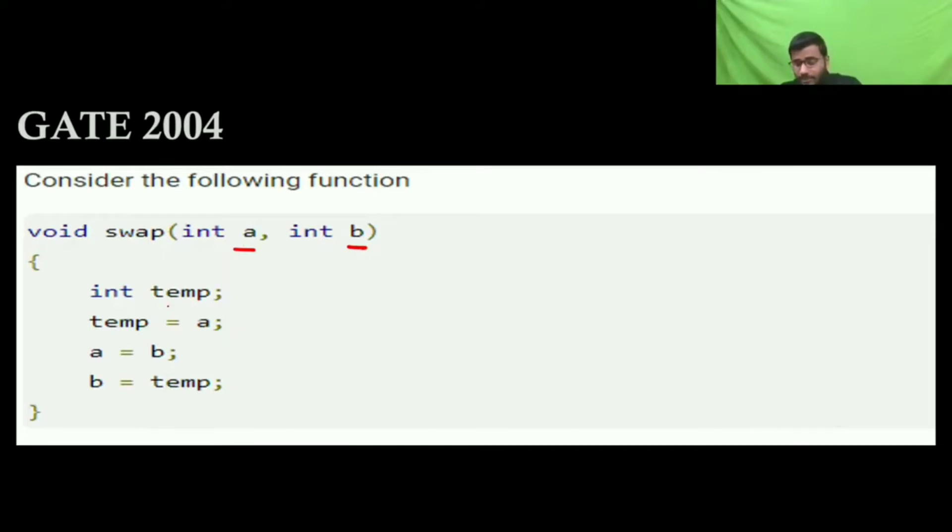The swap function has a temporary variable. In temp you have A, in A you have B, and in B you do this. So you are not swapping A and B. You know these things, I hope. Understood?